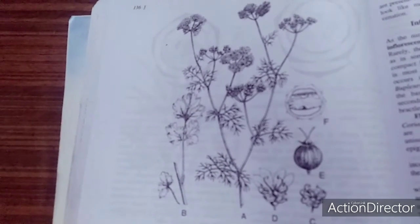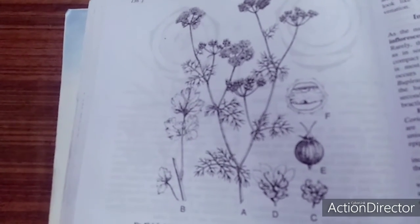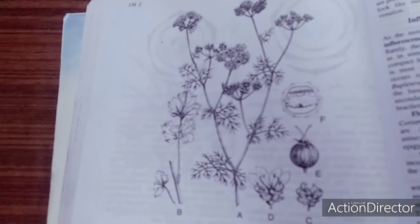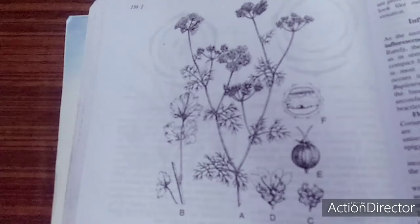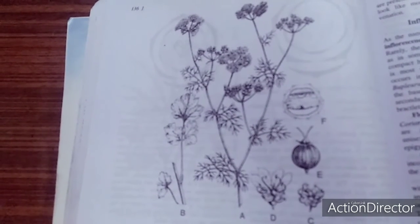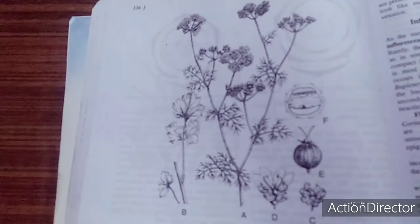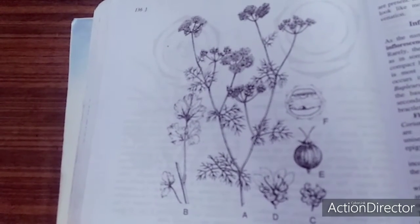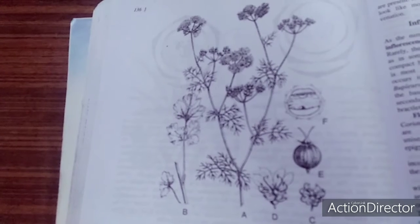The very interesting feature of this family is the schizocarpic fruit—the cremocarp. The fruit is a cremocarp, for example, if I'm taking the dhania seeds, this is technically the dhania fruit which we call the cremocarp.